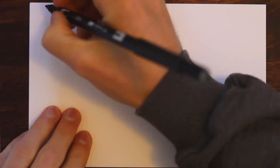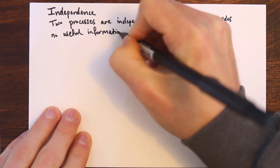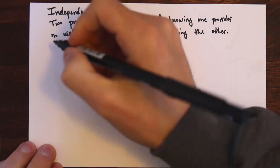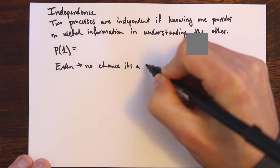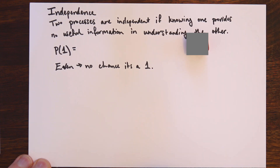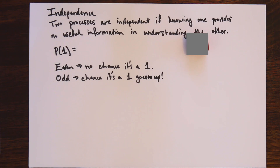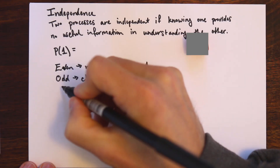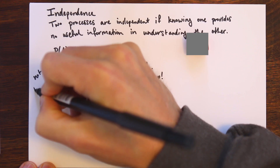The last topic we're going to talk about is independence. We say two processes are independent if knowing about the outcome of one provides no useful information in understanding the other. If I told you I rolled an even number, would that influence what you think the probability of a 1 is? Of course — if it's an even number the probability of a 1 is 0, since 1 isn't even. On the other hand, if I told you it was an odd number then the probability would be higher than you originally thought. So outcomes like 1, even, and odd all relate to each other — they aren't independent. Rolling a 1 is not independent of rolling an even number, and similarly, rolling a 1 is not independent of rolling an odd number.